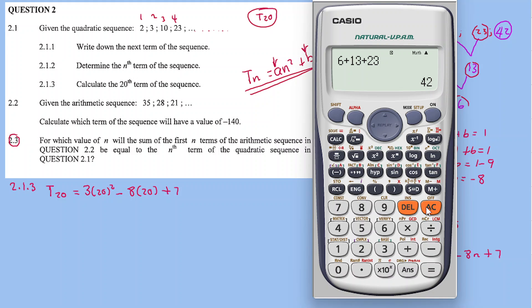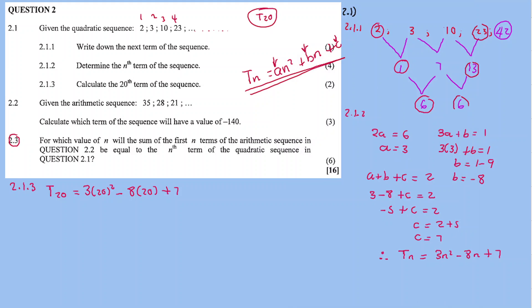T₂₀ = 3(20²) − 8(20) + 7 = 1200 − 160 + 7 = 1047.